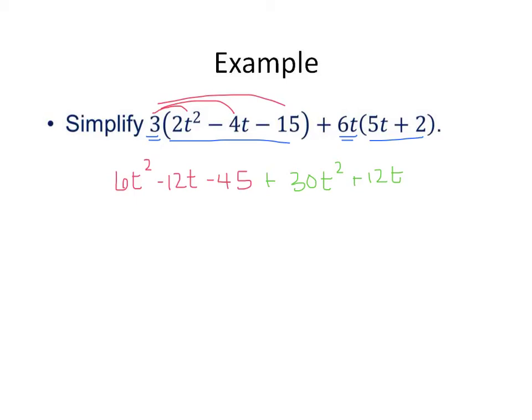Now keeping in mind that we always write things in descending order, we're going to start with our t squareds and get 36t squared. And then our t's actually cancel because a positive 12t and a negative 12t are going to cancel. So we're going to end with minus 45, and that is our answer.